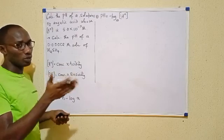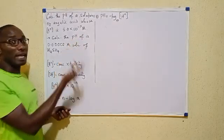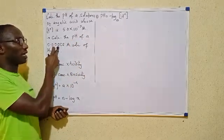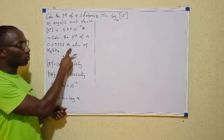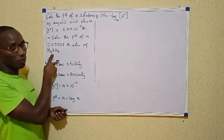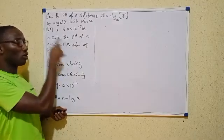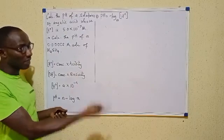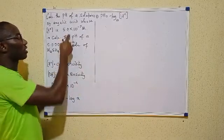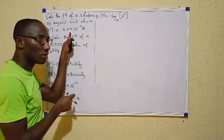What we were given here is described as the concentration of the solution. Because it talks about the solution of H2SO4. So this is the concentration of that solution, not the concentration of hydrogen ions in it. But in this first case, we are told that the hydrogen ion concentration is this.